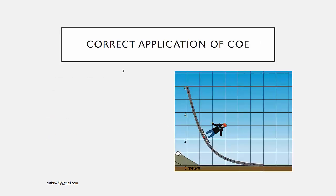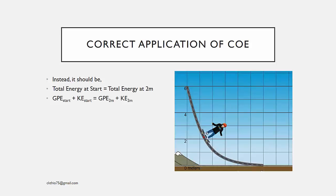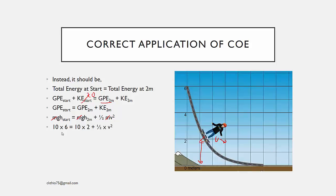The correct application of conservation of energy is that total energy at the start equals total energy at 2 meters. GPE at start plus KE at start equals GPE plus KE at the end. KE at start is still 0, but at 2 meters you still have some gravitational potential energy as well as kinetic energy. Substituting in values — since m cancels across all three terms — you get gh₁ = gh₂ + ½v², which gives a velocity of 8.9 meters per second.